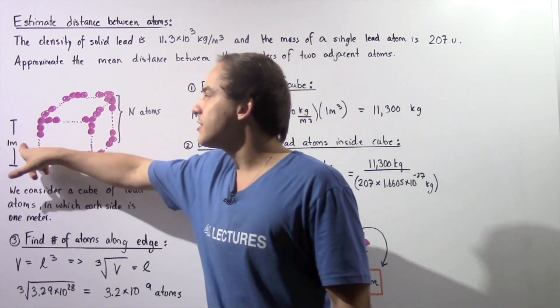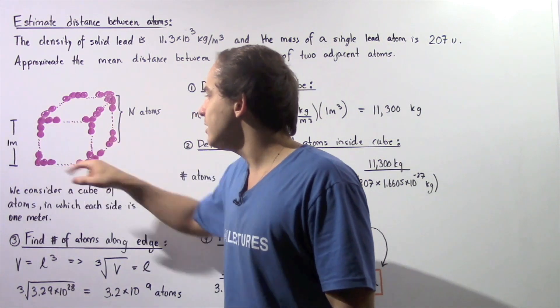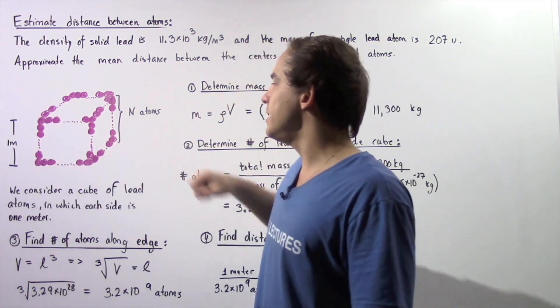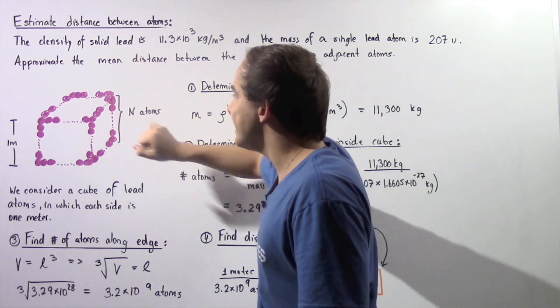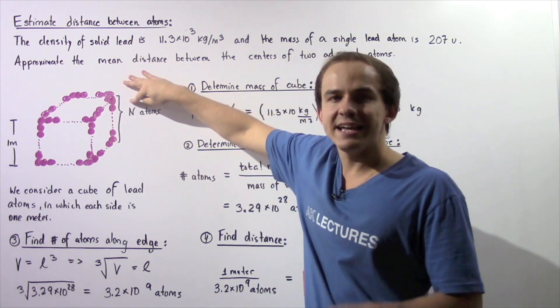So let's suppose we want to consider a cube of lead atoms in which each side of the cube, each edge has a length of one meter. So one meter height, one meter width, and one meter length. So the number of atoms along any edge is given by n.